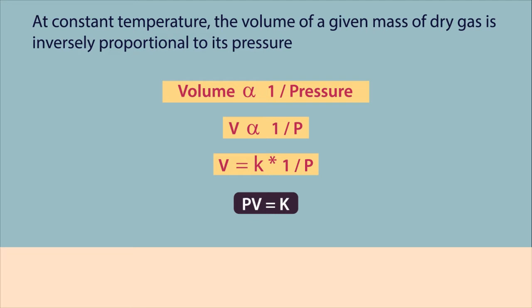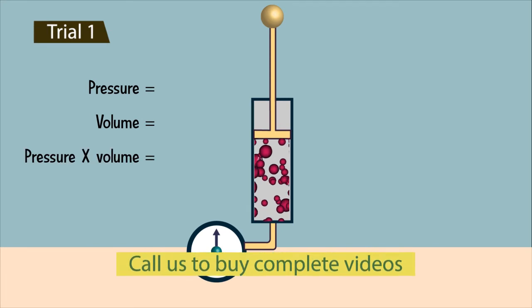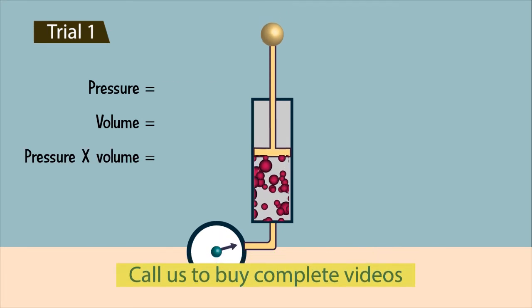Let's verify if the product of volume of gas and pressure is always the same for a given mass of gas. In the first trial, maintain the pressure of 1 × 10⁵ pascals and measure the volume — it is 1 liter. Calculate the product of pressure and volume: it is 1 × 10⁵.